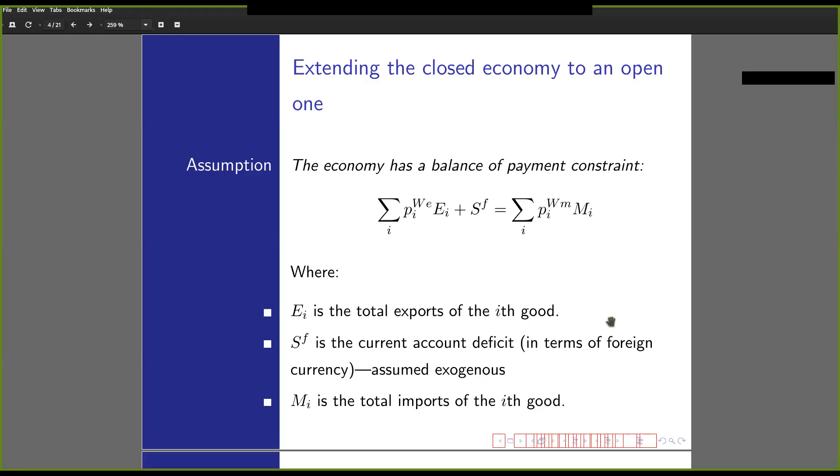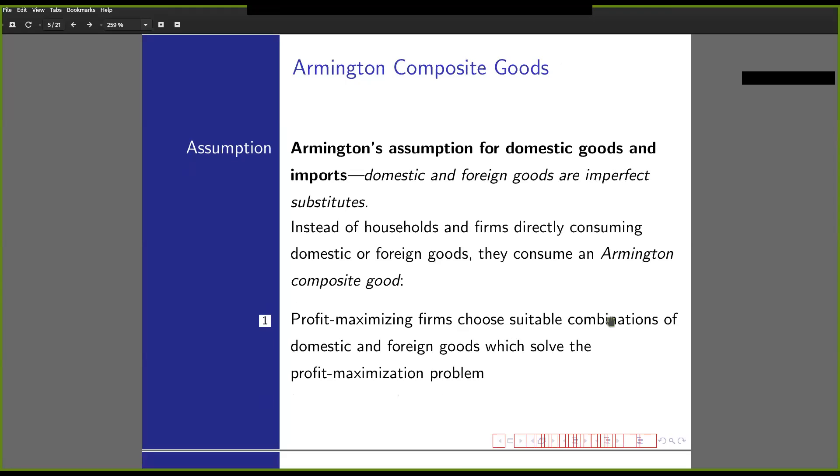We go to our first Armington assumption. Here, we posit that domestic and foreign goods are imperfect substitutes. Instead of households and firms directly consuming domestic or foreign goods, they consume what we call an Armington composite good. For profit maximizing firms, they choose suitable combinations of domestic and foreign goods which solve the profit maximization problem, and households just consume these Armington composite goods based on whatsoever utility function.